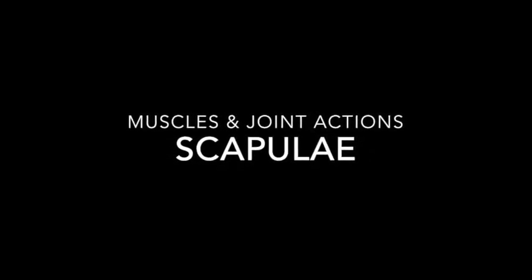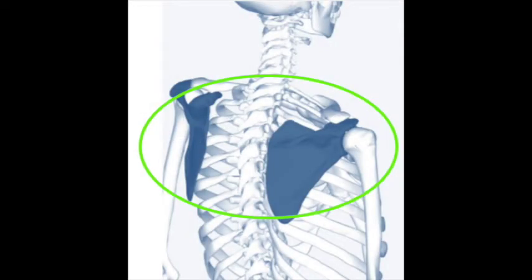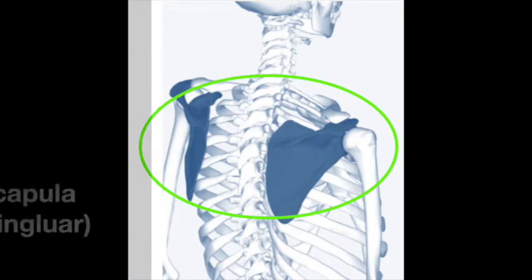Welcome to the AFLCA Exercise Theory video series supplementing Chapter 7, Basics of Anatomy. In this video, we're going to cover the muscles and joint actions of the scapula, or shoulder blade.